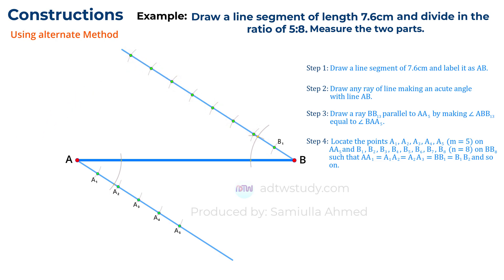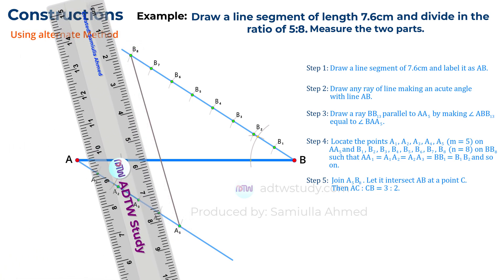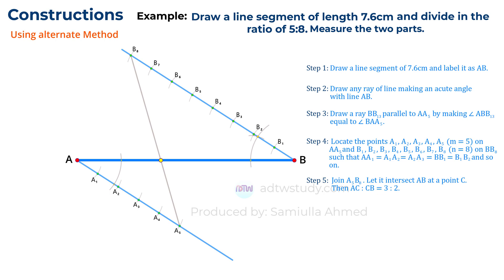The point where this line intersects the original line AB will be our point C, where the line is divided in the ratio of 5 to 8.